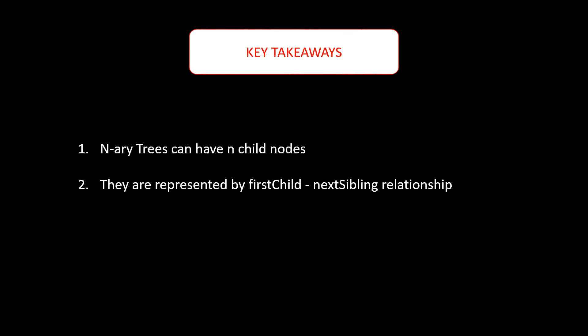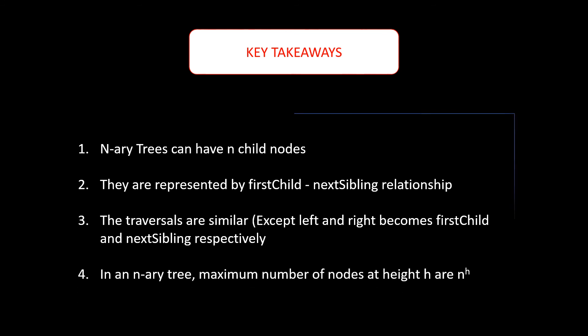That's all for n-ary trees. Let's revisit the key takeaways from n-ary trees. N-ary trees can have N child nodes. They are represented by first-child-next-sibling relationship. The traversals are similar to a binary tree except left and right becomes first-child and next-sibling respectively. And the maximum number of nodes at height h can be given by n raised to h.